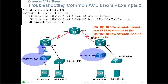Next problem: network 192.168.10.0 cannot use TFTP to connect to network 192.168.30.0. Looking at the access list, statement 10 says deny TCP 192.168.10.0 network, any, if they use Telnet. That doesn't apply here because we want TFTP. Sequence 20 says deny this network going to 192.168.30.1 to this server if they are using SMTP. We're not using SMTP, we are using TFTP. Statement 30 says permit TCP any any. Pause the video and see if you can find the problem.